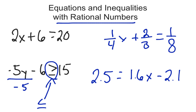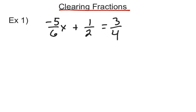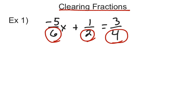We've got a couple tricks up our sleeves to help us with that. For example one, we're going to do this by clearing fractions. If I have an equation that has fractions in it, I can get rid of the fractions, because it's easier if I have an equation that doesn't have any fractions. Our goal is to find a way to get rid of the denominators so we have just regular numbers and no fractions. The way we're going to clear fractions is to take those denominators — the 6, the 2, and the 4 — and find a common denominator for all of those.